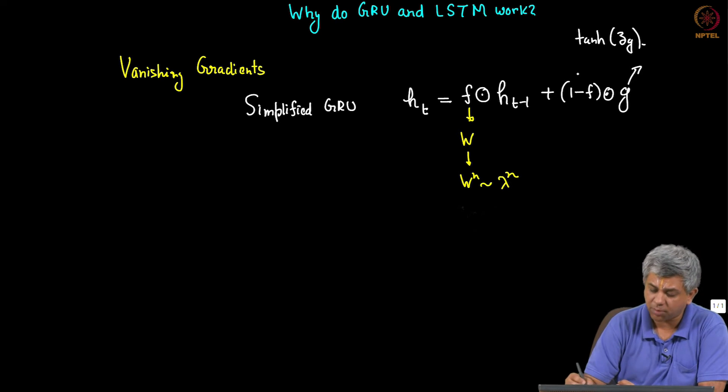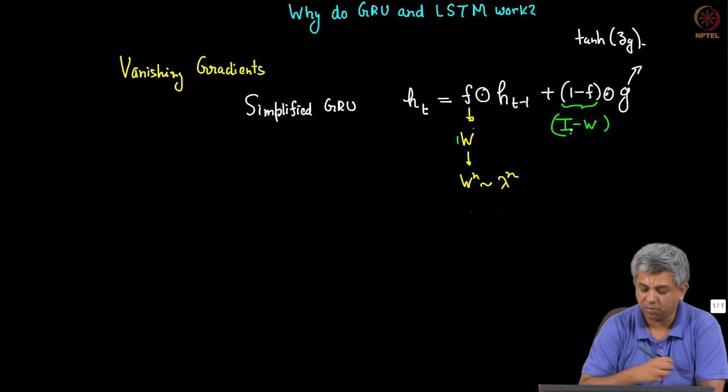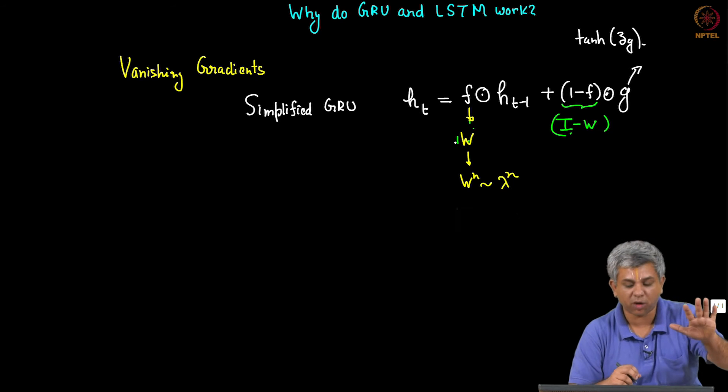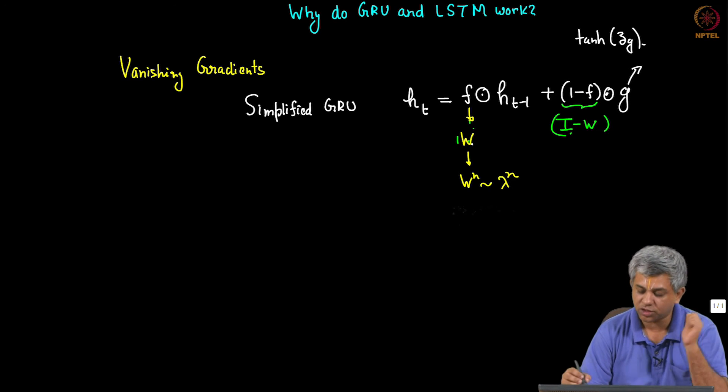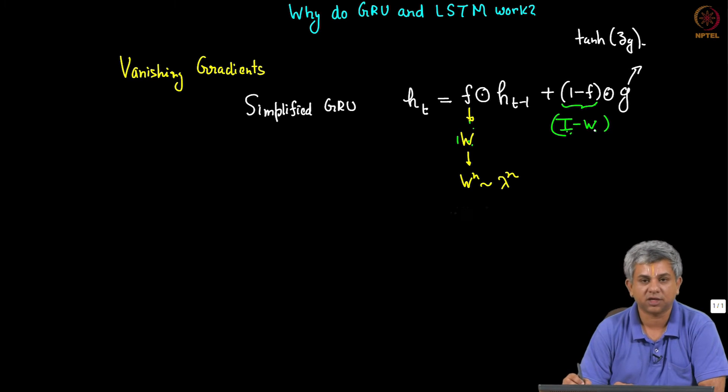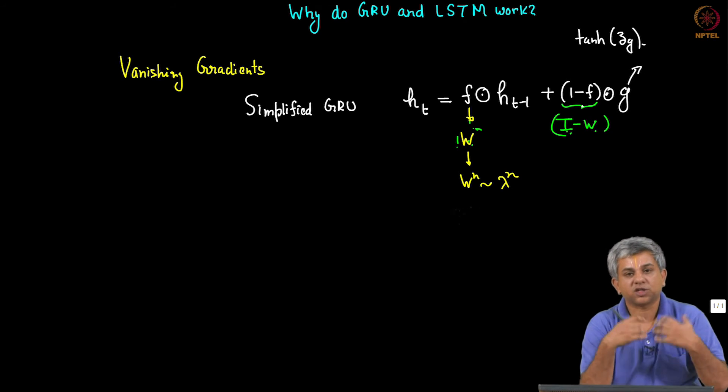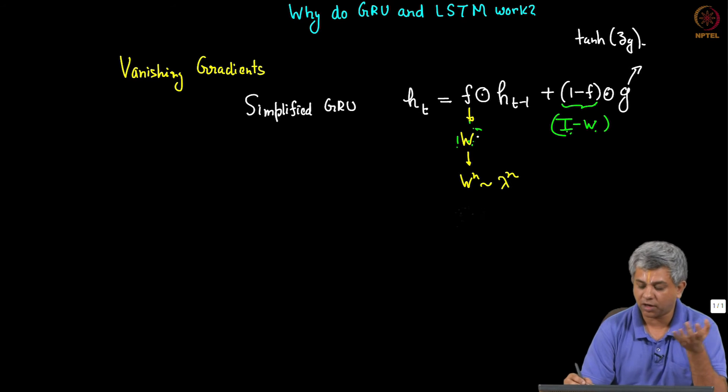Now how does this term help? Notice that when this is W, this matrix can be approximated as if it is the identity matrix minus W. If this goes as W, that becomes I minus W. So if this number is small, this becomes correspondingly large. If this is 0.01, that becomes 0.99. So in some sense this term and that term balance out.